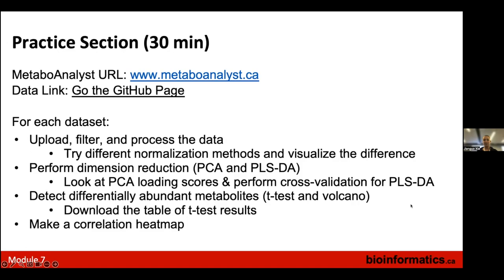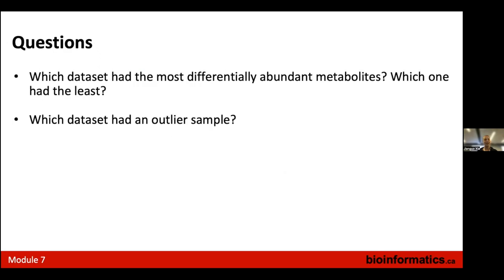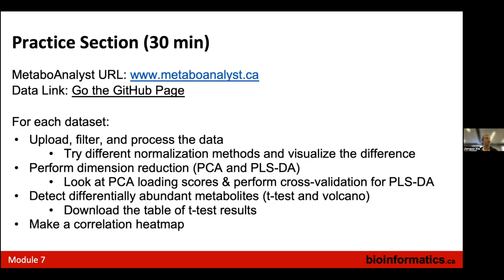If you have experience with MetaboAnalyst, this is a simple analysis so you might get through all three datasets. In that case, try to find which dataset has the most differentially abundant metabolites. When I analyzed the datasets yesterday, I found that one appears to have an outlier sample — try to find that. Everyone can start now, and we'll go around to help and reconvene in half an hour.